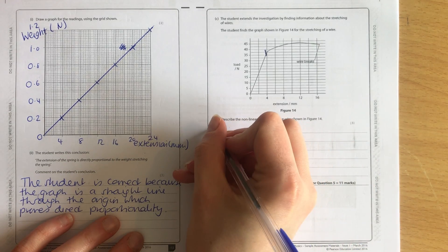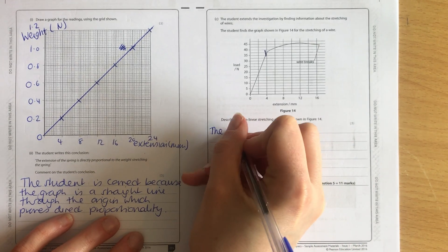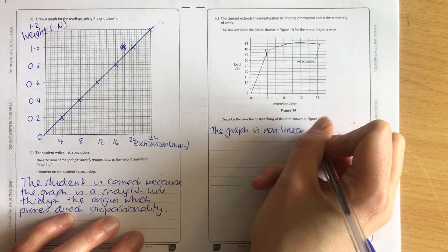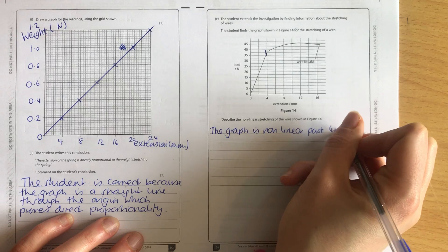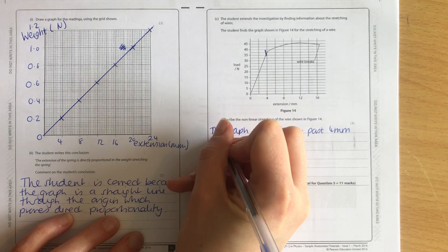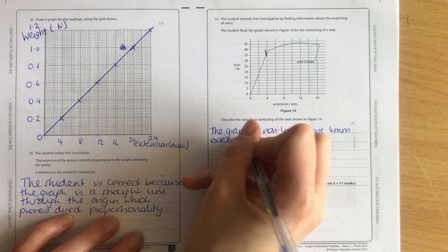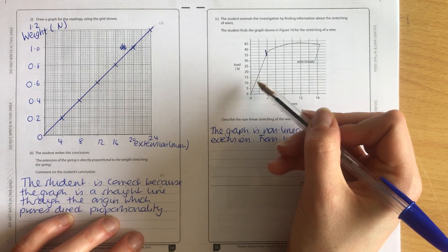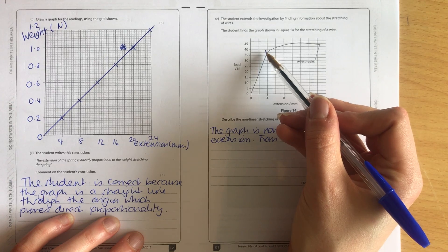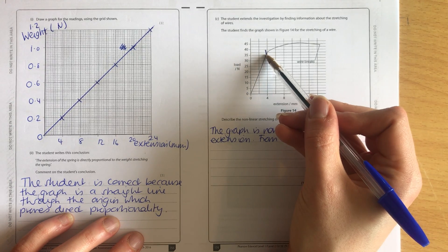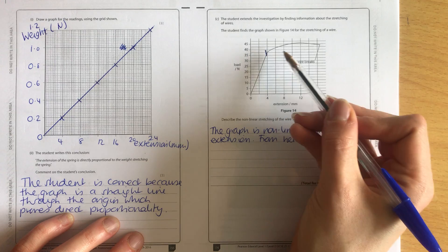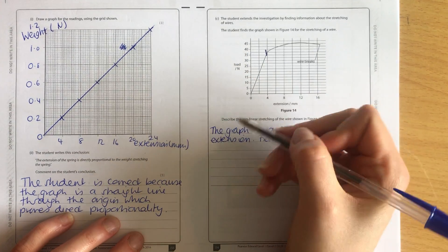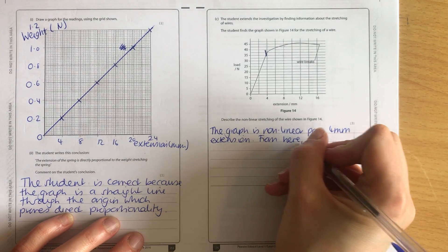I'm going to say the graph is non-linear past 4 mm extension. From here, if we think about it, before, to get 4 mm extension, we had to add in 35 newtons. Then to get to 8, which is another 4, I only have to add in about 7 more newtons. So I'm getting a lot more stretch for not much more force. So from here, there are large increases in extension for small increases in force, up to a peak.